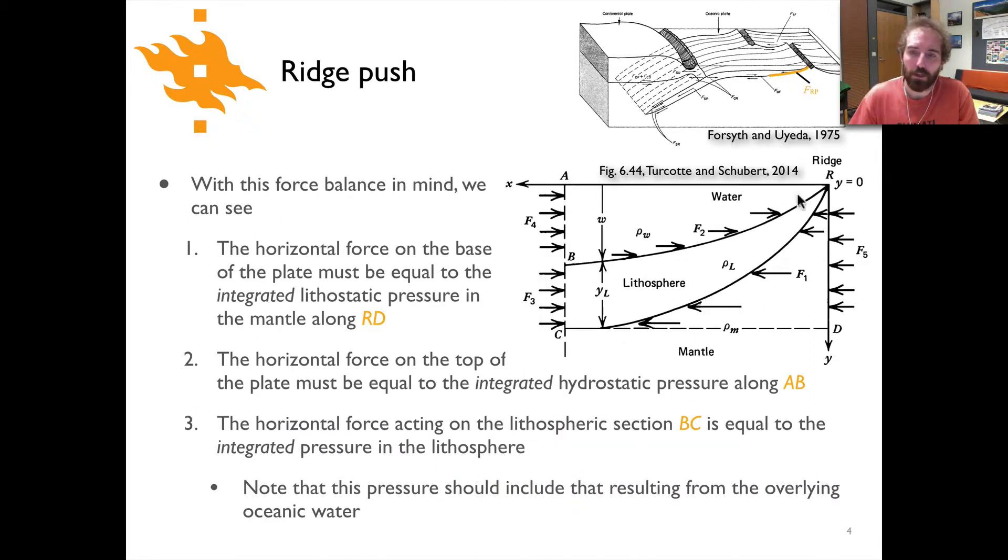We can look at the picture here of our cross section through some cartoon version of the oceanic lithosphere and you can see then water sitting on top of this as the hemisphere that would be beneath it and our coordinate system is defined in way such that y equals zero is at the top of the ridge. With this general picture we can see there are a series of different forces labeled here f1, f2, f3, f4, and f5.